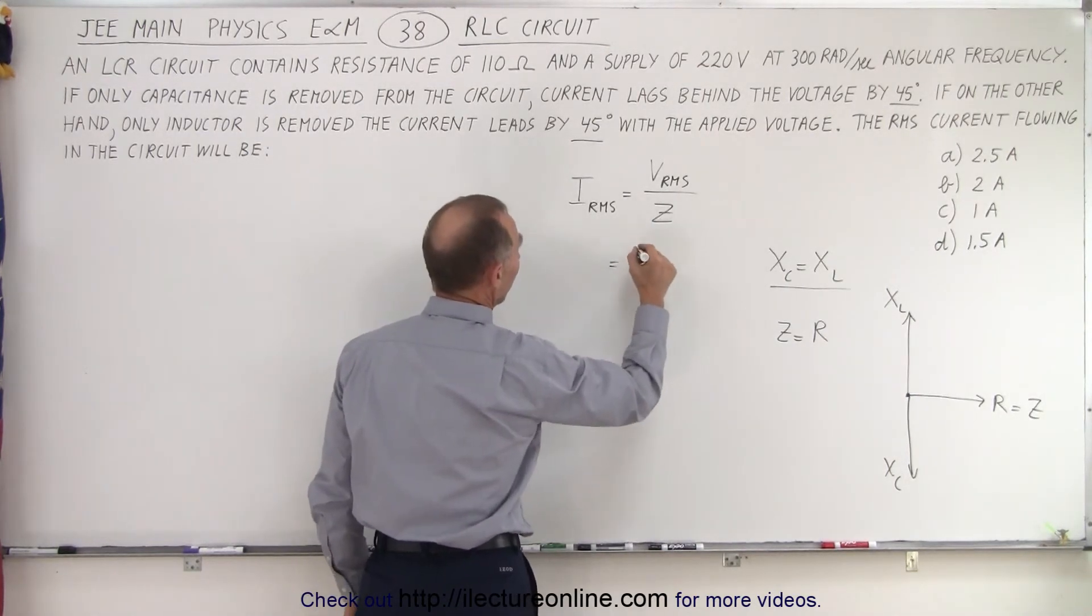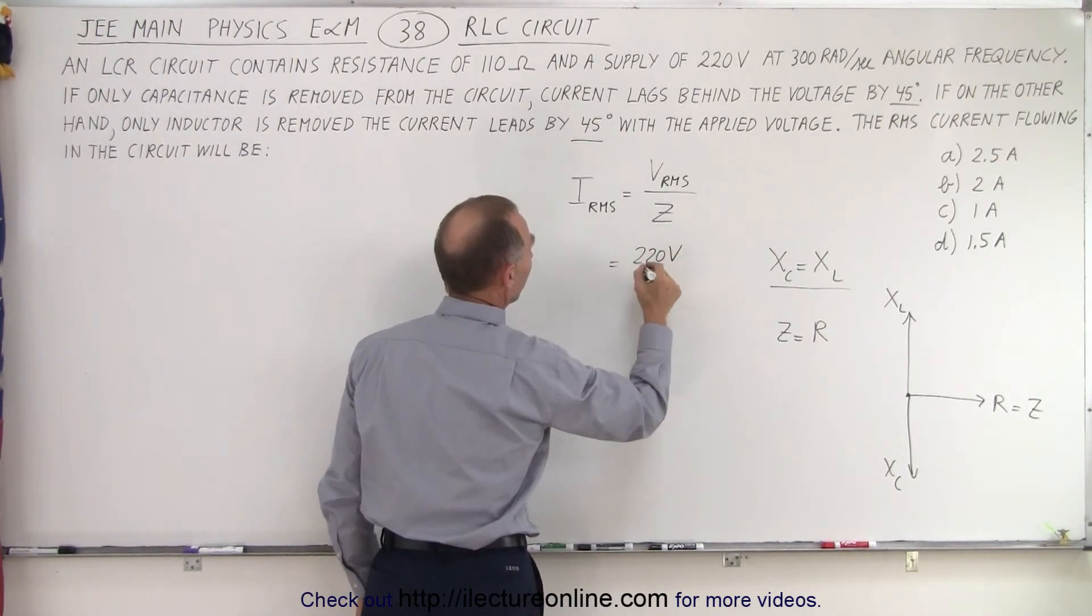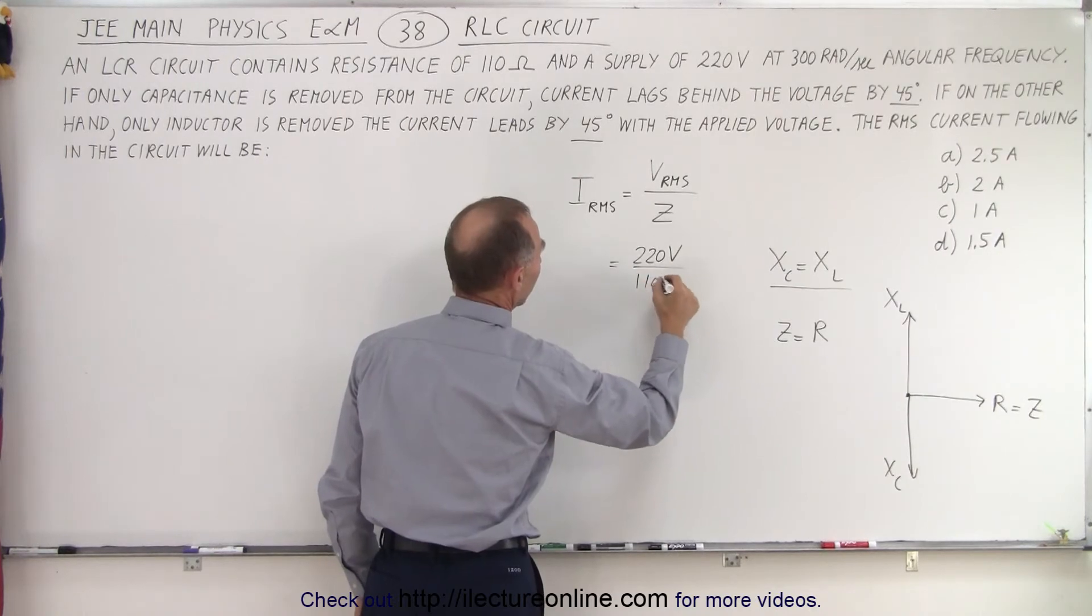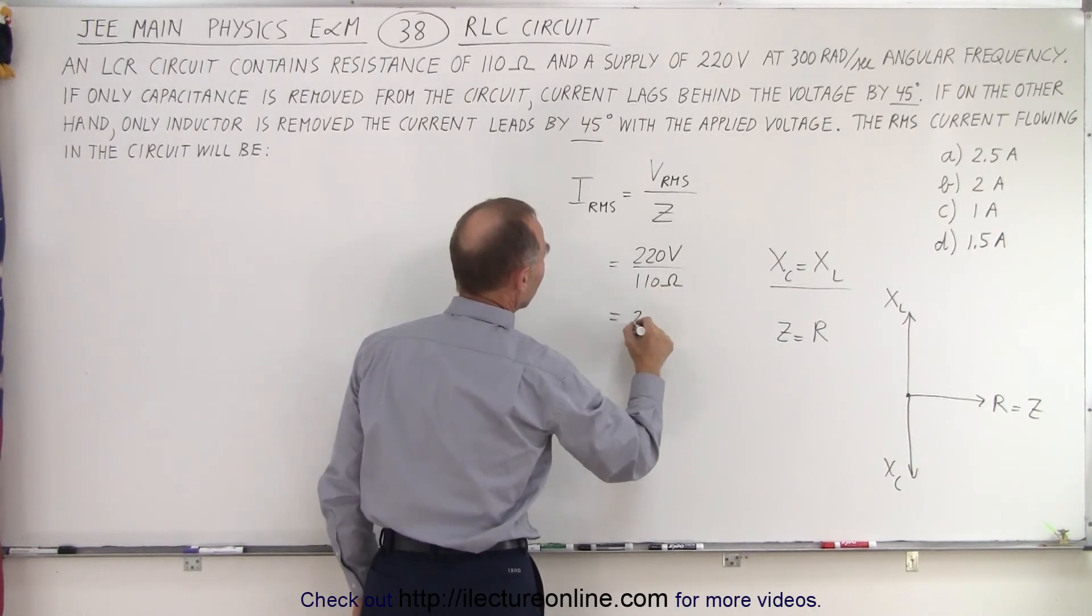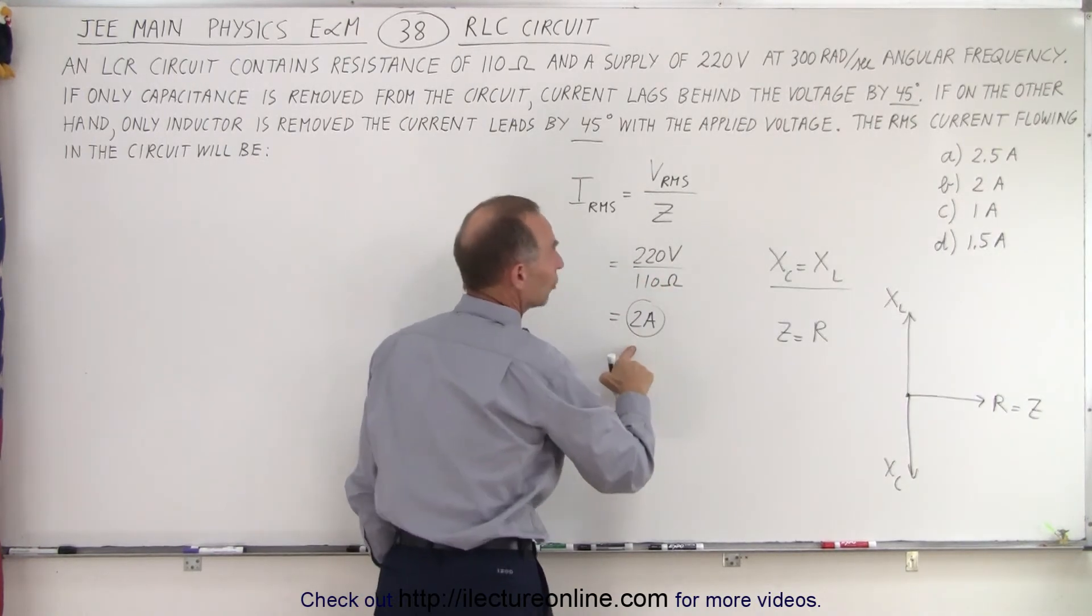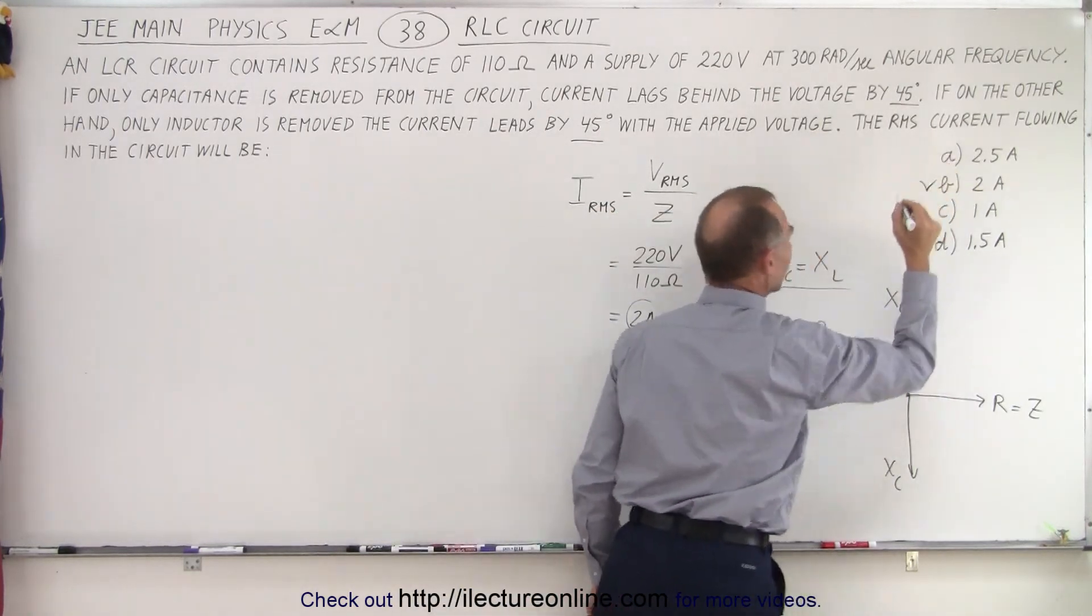And therefore, we can say that in this case, we have 220 volts RMS divided by 110 ohms of resistance, and that would be 2 amps. And 2 amps would be answer B.